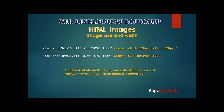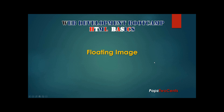For image size and width, there are two formats available. The first is the style format, using a style attribute to specify width and height. The second is the attribute method using width= and height= directly on the image tag. The attribute method is the suggested approach.